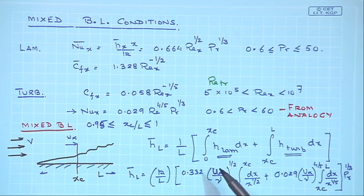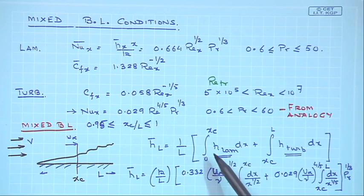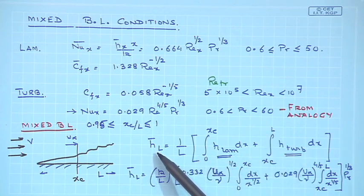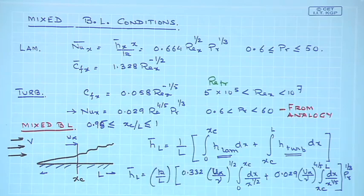Up to xc the flow remains laminar, and beyond xc it becomes turbulent. The purpose of this exercise is to obtain an average value of the heat transfer coefficient — since in engineering calculations you want the overall heat transfer coefficient, not just the laminar or turbulent value alone, but the length-averaged value over the entire plate.